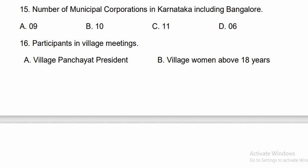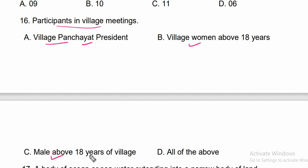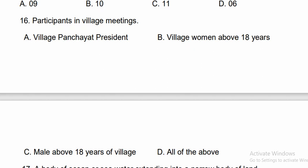Question sixteen: Who participates in village meetings? The village panchayat president is present, village women above 18 years are present, and males above 18 years are also present. That means all of the above are present, so option D is the correct answer.